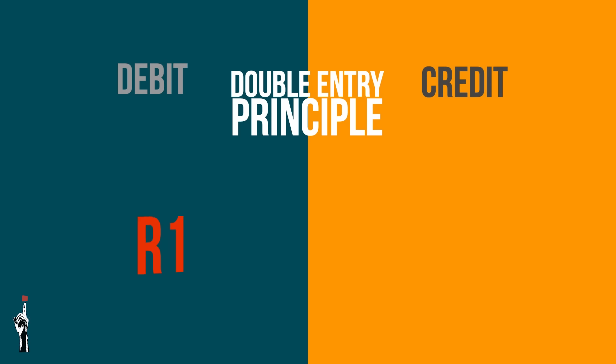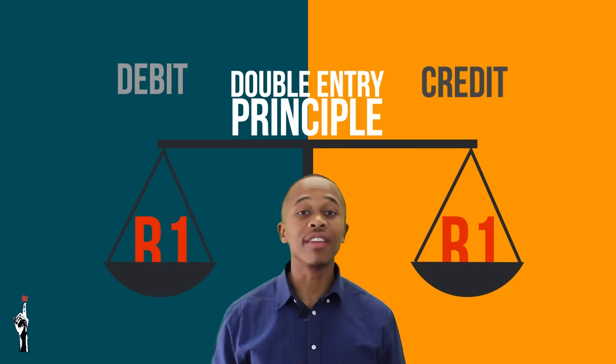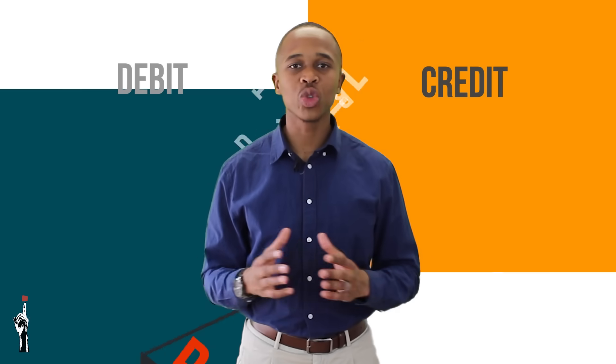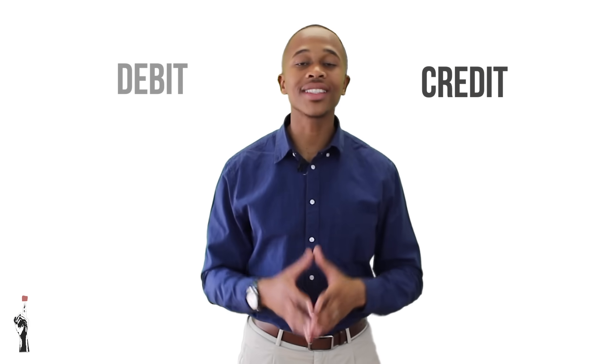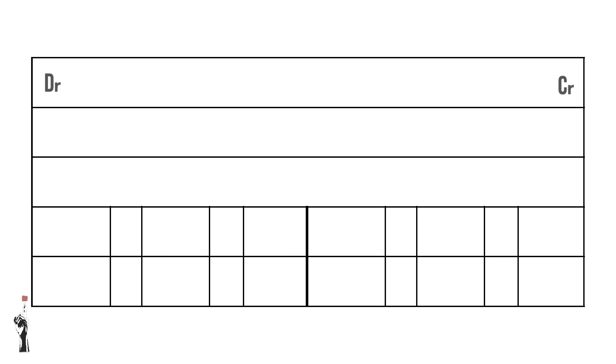This means for every one rand entered into the debit side of the T-accounts, another one rand must be entered into the credit side. The two sides must be the same when you add each side. If this is still confusing to you, don't worry — it will make sense later in this lesson.